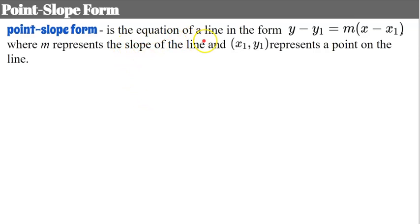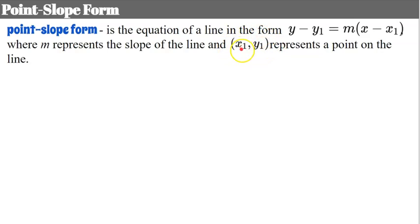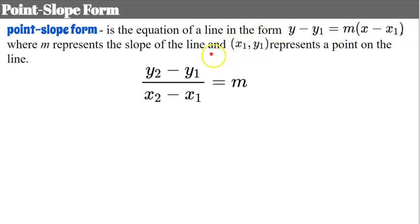Point slope form is the equation of a line in the form y minus y₁ equals m times the quantity x minus x₁, where m represents the slope of the line and (x₁, y₁) represents a point on the line. Slope is the change in y — subtracting the y coordinates of two points — divided by the difference of the x coordinates, where (x₁, y₁) is one point and (x₂, y₂) is a second point.